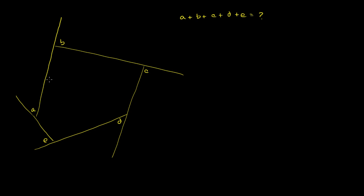This looks like an interesting problem. We have this polygon — it looks like a pentagon right over here. It has five sides. It's an irregular pentagon; not all the sides look to be the same length. The sides are kind of continued on, and we have these particular exterior angles of this pentagon. What we're asked is: what is the sum of all of these exterior angles? It's kind of daunting, because they don't give us any other information — they don't even give us any particular angles.